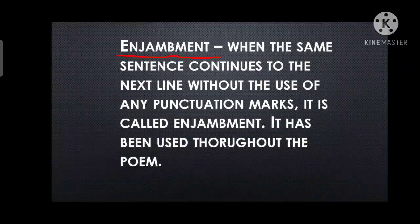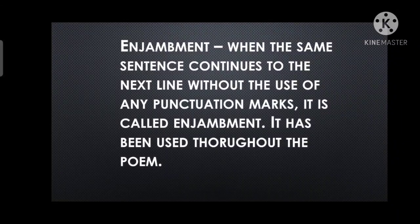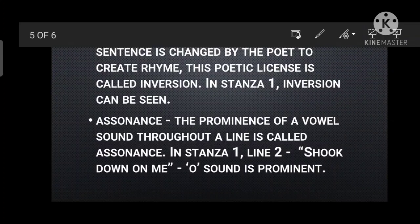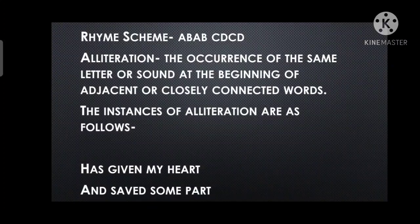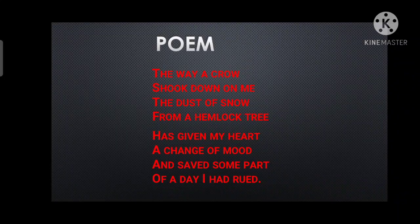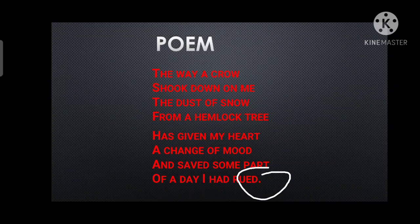Next is enjambment. Enjambment means when the same sentence continues to the next line without the use of any punctuation mark — that is called enjambment. It has been used throughout the poem. You can see that the poem reads: 'The way a crow shook down on me, the dust of snow from a hemlock tree, has given my heart a change of mood and saved some part of a day I had rued' — only at the very end is a full stop used. No other punctuation is used anywhere, which is why it is enjambment.